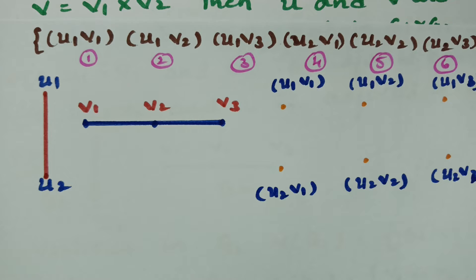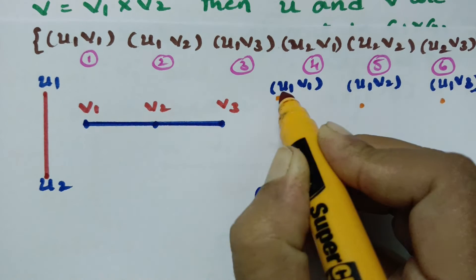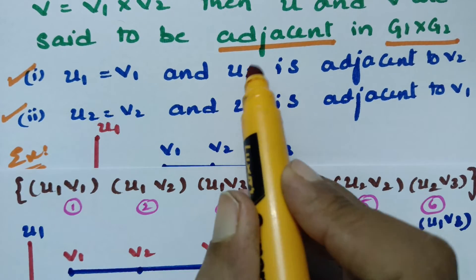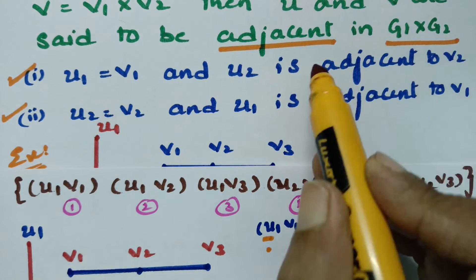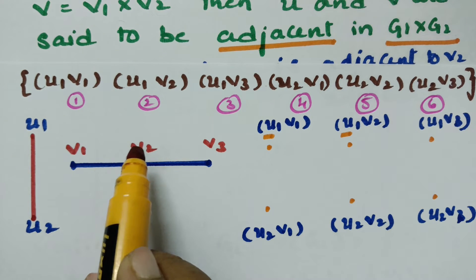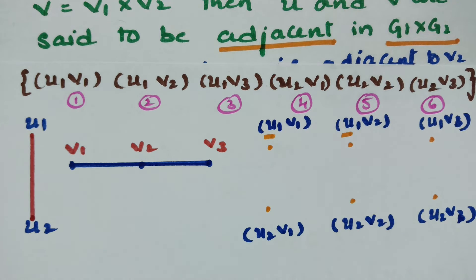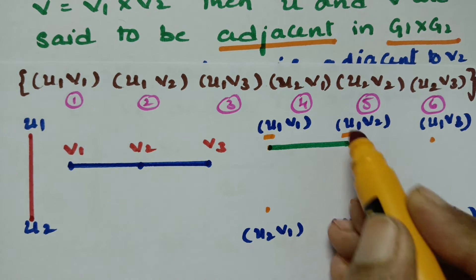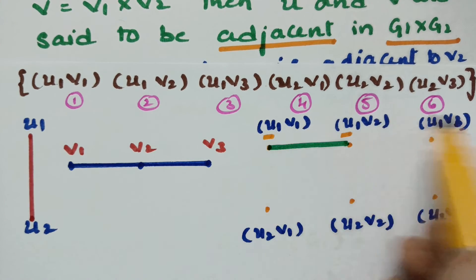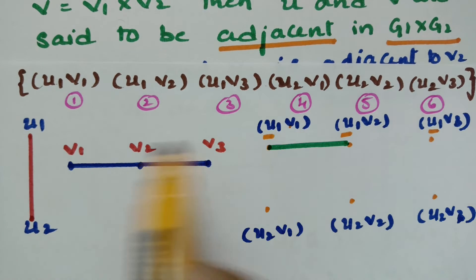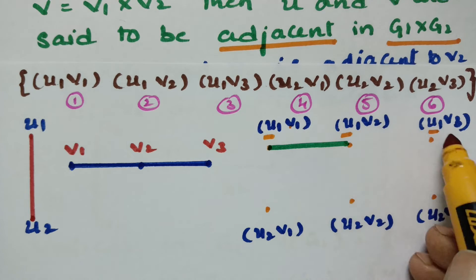Now we apply the conditions to determine edges. For points (U1,V1) and (U1,V2): the first components are equal (U1 = U1), so we check whether V1 and V2 are adjacent. V1 and V2 are side by side, so they are adjacent. Therefore, we can make an edge between these two points. Next, checking (U1,V1) and (U1,V3): U1 equals U1, so we check V1 and V3 — they are not adjacent, so no edge.